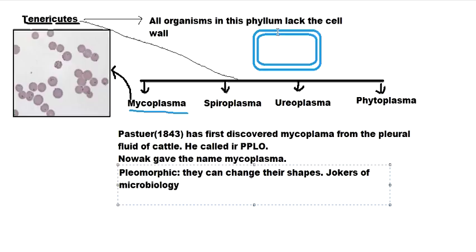Research later found that mesosomes are actually degraded portions of the cell membrane. When antibiotics act on the cell membrane, they destroy portions of it which hang out and are observed under the microscope. Previously, people called these mesosomes. It is obvious that Mycoplasma will contain mesosomes as they are very much pathogenic and affected by antibiotics, leaving destroyed cell membrane portions.